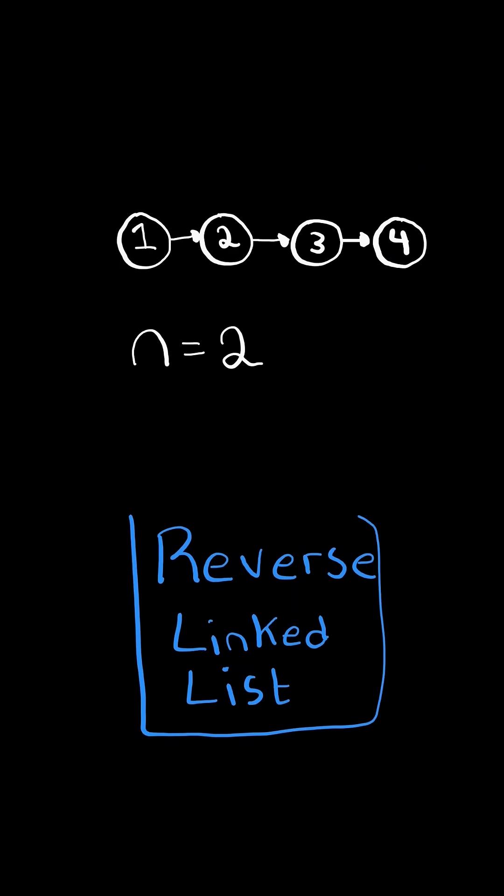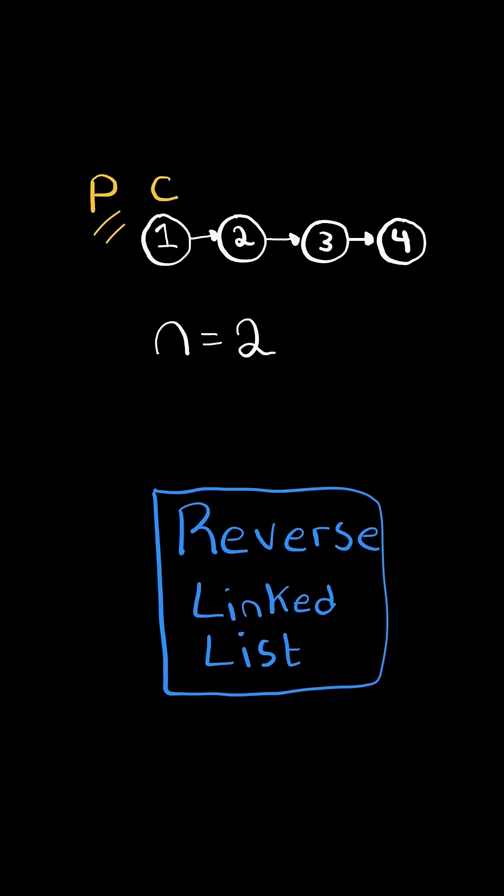First, we want to reverse the linked list. We will have a previous pointer set to none, and the current pointer set to head.